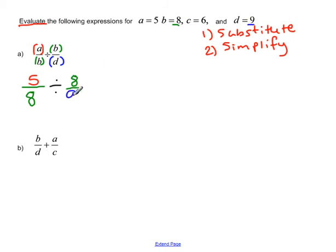So now I've got this problem, 5 eighths divided by 8 ninths. We need to remember how we do division with fractions. So remember the first one stays the same, so 5 eighths.